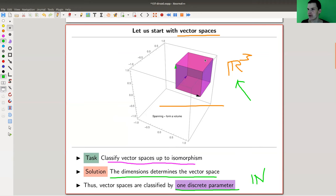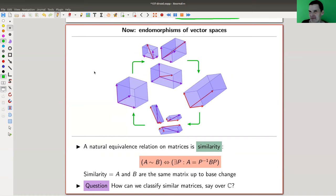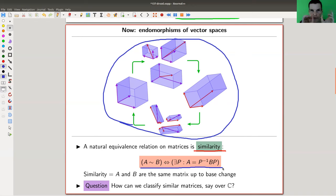And now endomorphisms of vector spaces - matrices - certainly one of the most important objects, tools, whatever you want to call them in mathematics altogether. And kind of a natural equivalence relation on them. Here our equivalence relation was isomorphism, and now our equivalence relation is similarity, which really just means they're the same matrices up to base change. In formulas here, so here's a base change, very nice. The choice of basis we just learned is kind of unimportant, so we can choose any basis. And this is a corresponding one for the matrices - we just went one step further, from the object vector space itself to endomorphisms of vector spaces, matrices.